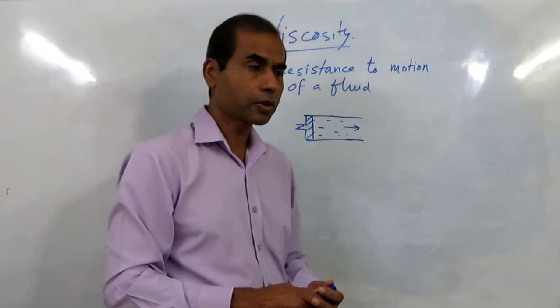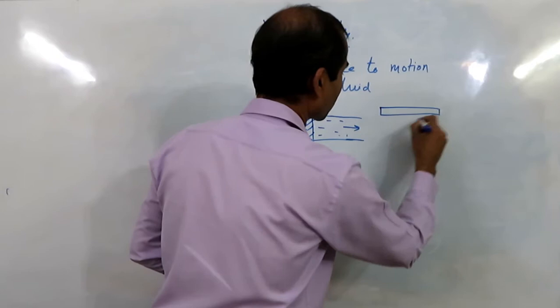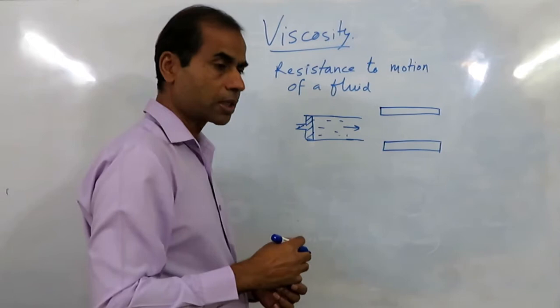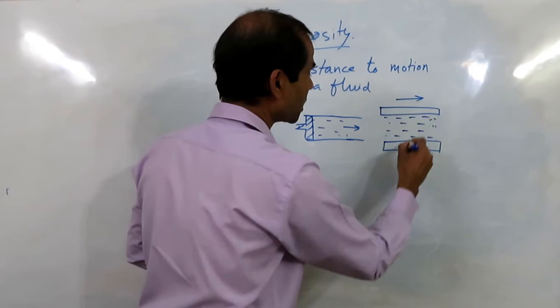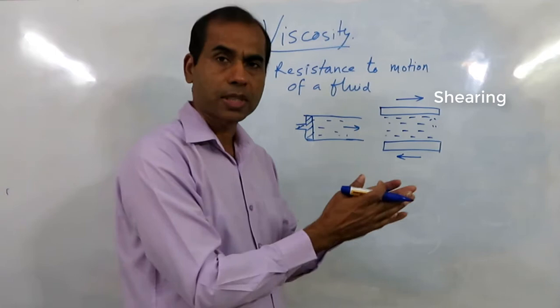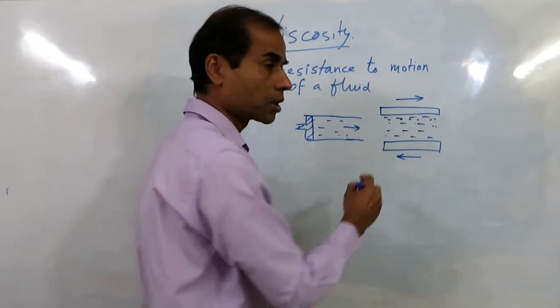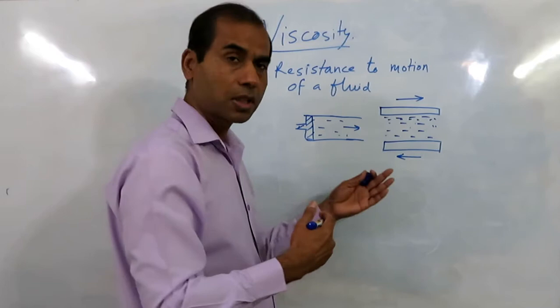The definition of viscosity is done in this way. Viscosity is defined as the resistance of the liquid in shear. For example, if we have liquid here and we are shearing — that means we are applying the force tangentially.